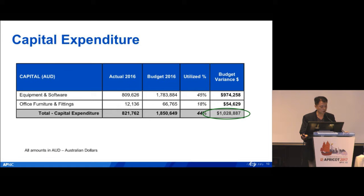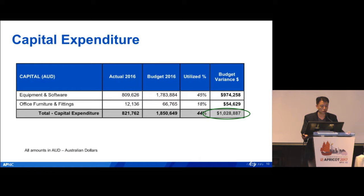Another part is CAPEX, capital expenditure. In 2016 actual expenditure was $821,000 — below what we budgeted at $1.8 million. Much of this was for office furniture and equipment. Because we adopted cloud services, the cost was reduced last year, and some of the cost properties will be incurred in 2017.